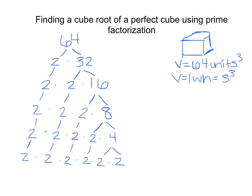Breaking 4 down into 2 times 2, we now have the prime factorization of 64. Counting up all the 2's in our factor tree, we have six 2's total. So 64 equals 2 times 2 times 2 times 2 times 2 times 2 — that's 2 to the sixth power.